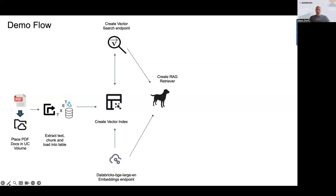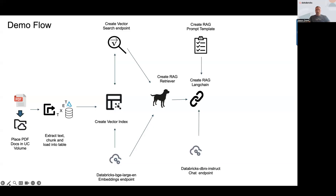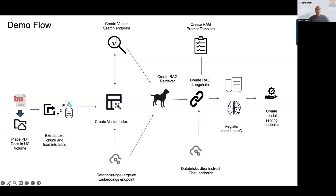Once we've got that put together we're going to create something called a RAG retriever, which goes into a RAG LangChain that basically combines the prompt template — the instructions for how you want this LLM to behave — and also the DBRX Instruct model, which gives it the front-end natural language query capabilities. Once we've got that assembled we'll register that as a model to UC and then create a model serving endpoint so users can interact with it in real time.